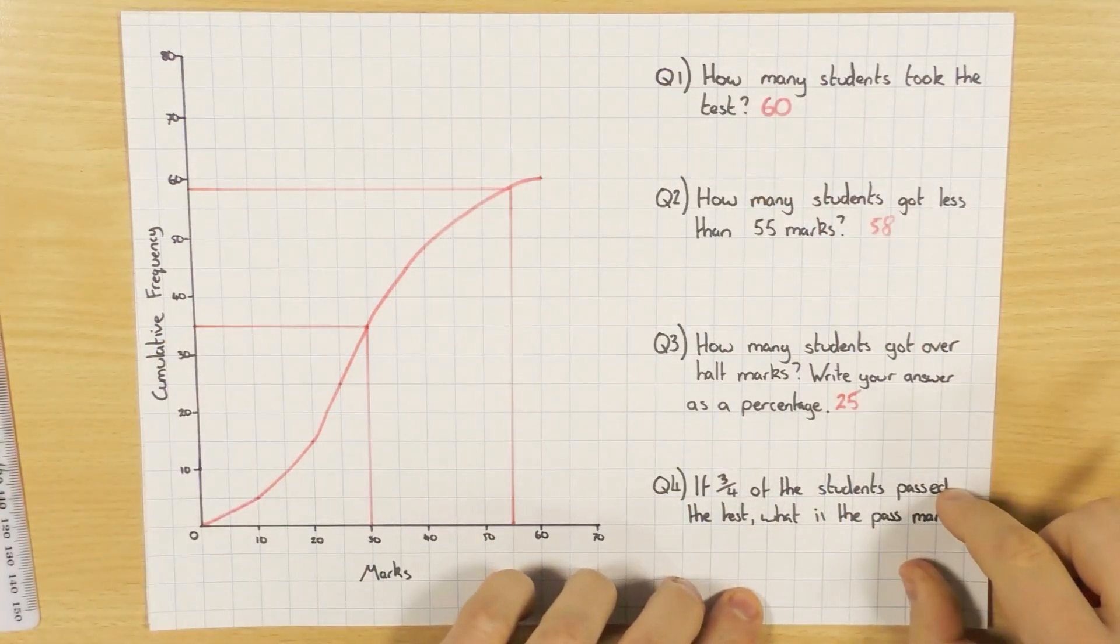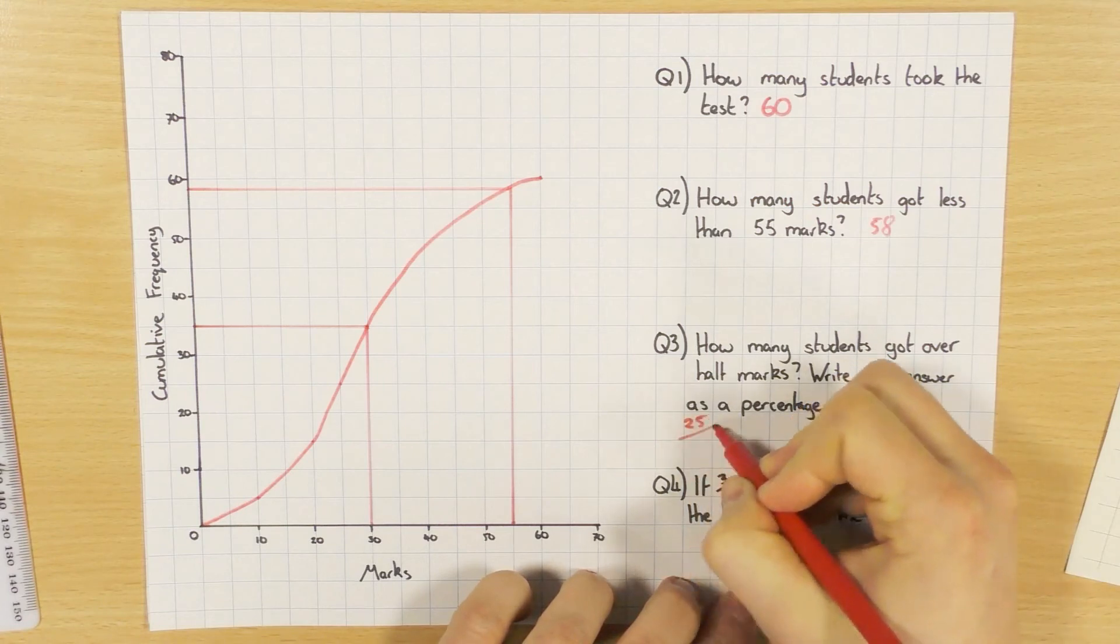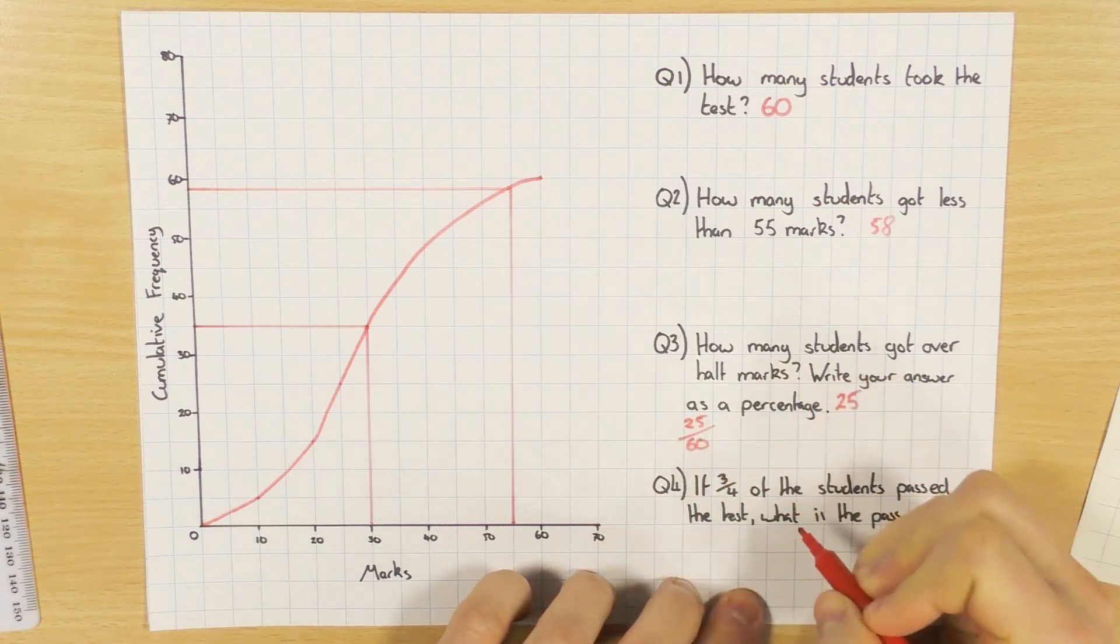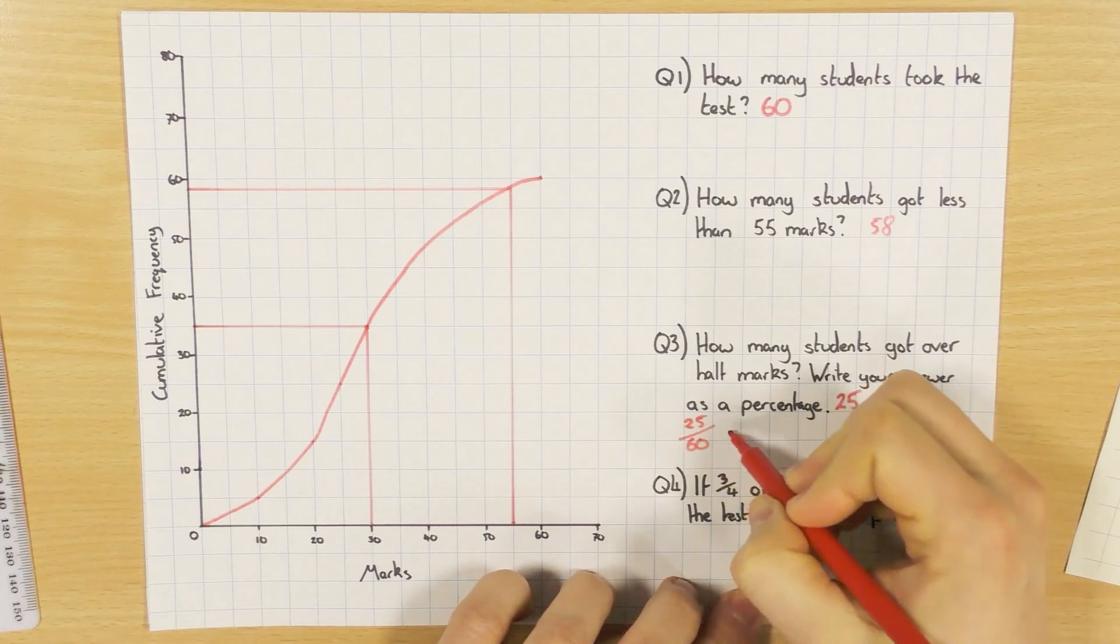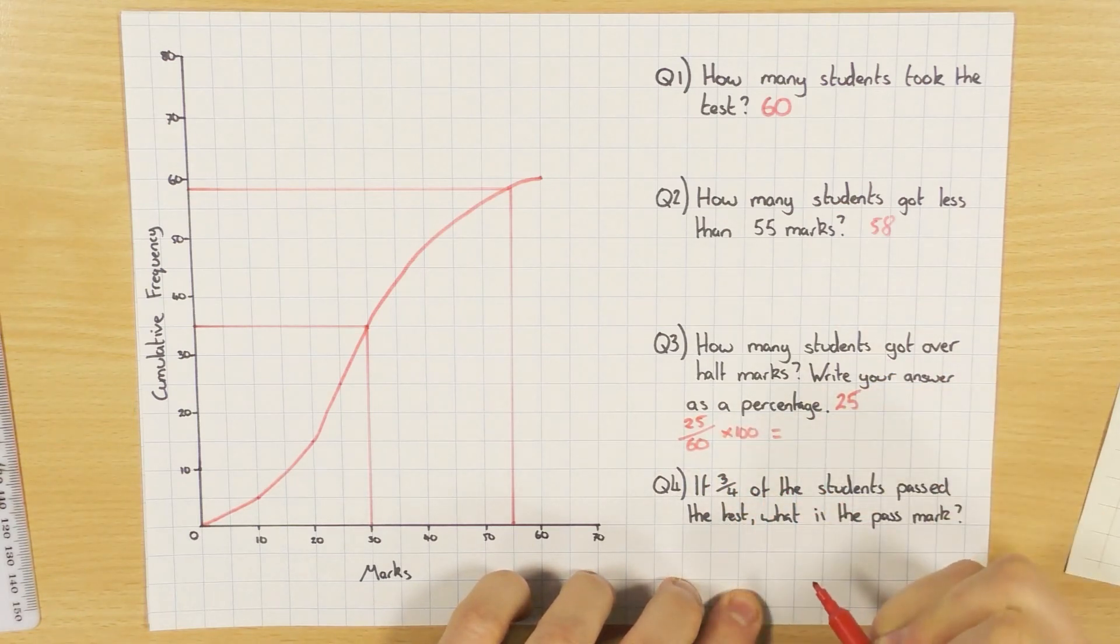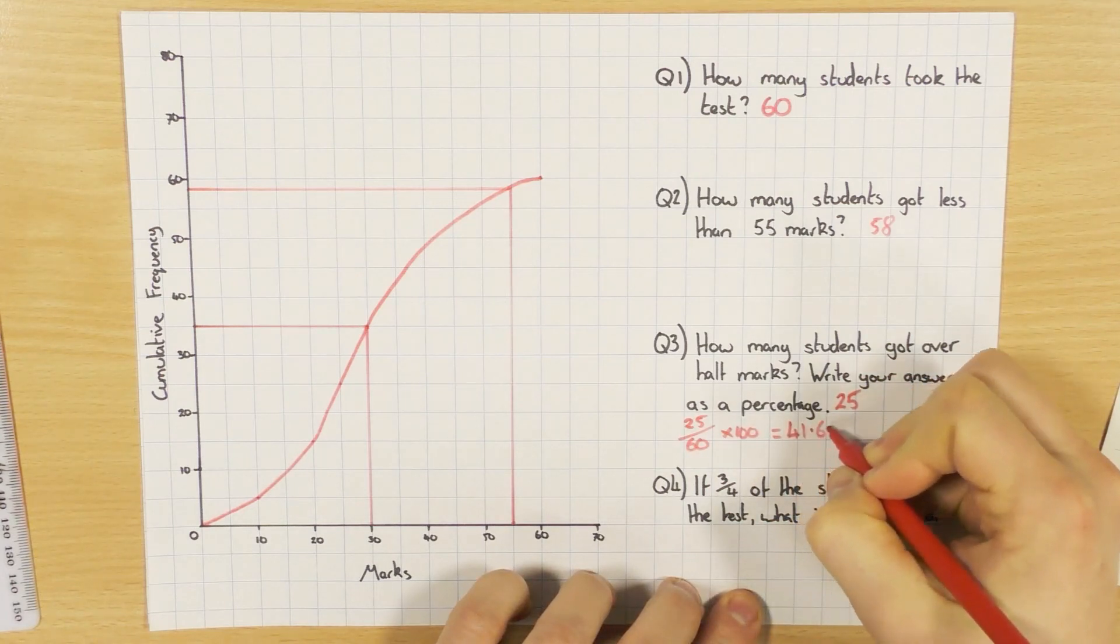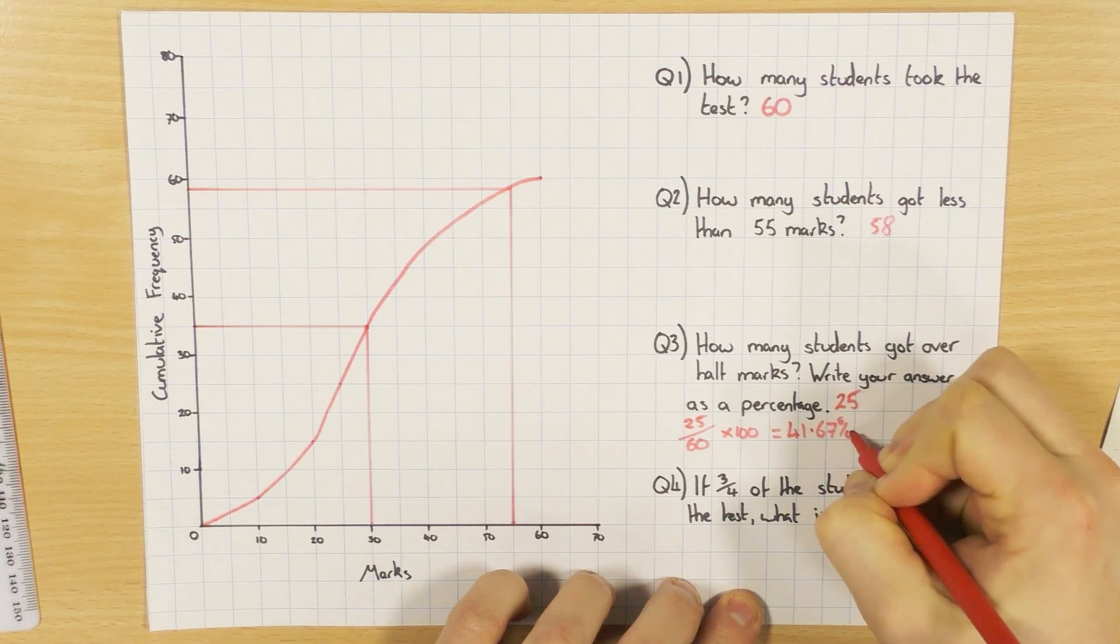Next bit says write your answer as a percentage. Well, it's 25 students out of a total of 60, so if you do 25 over 60, times that by 100, you can then get that as a fraction, which, if you use a calculator, comes out at 41.67%.